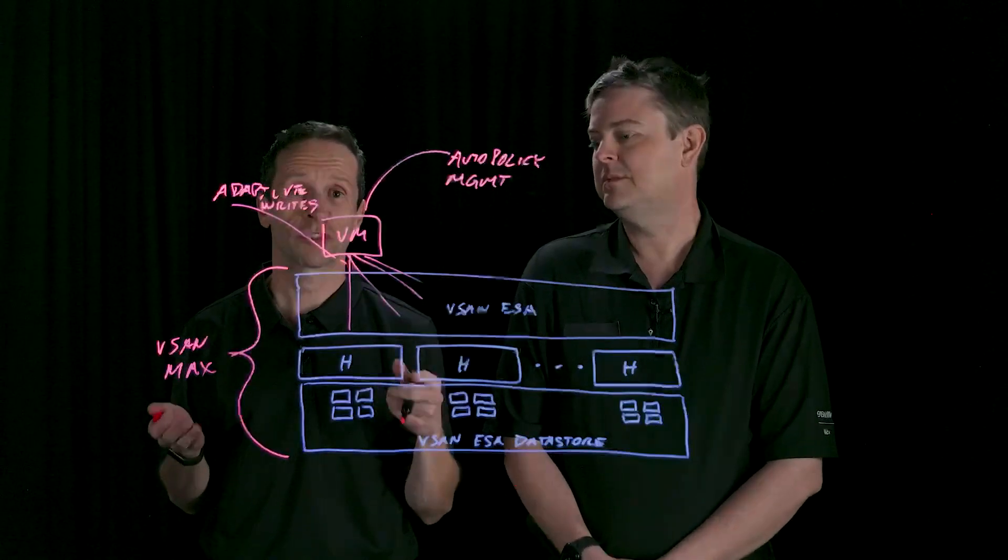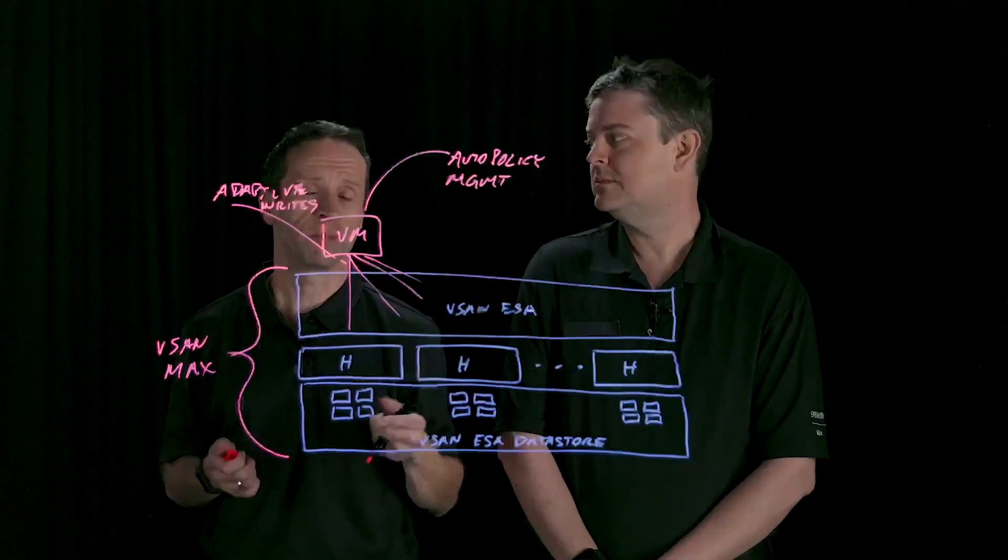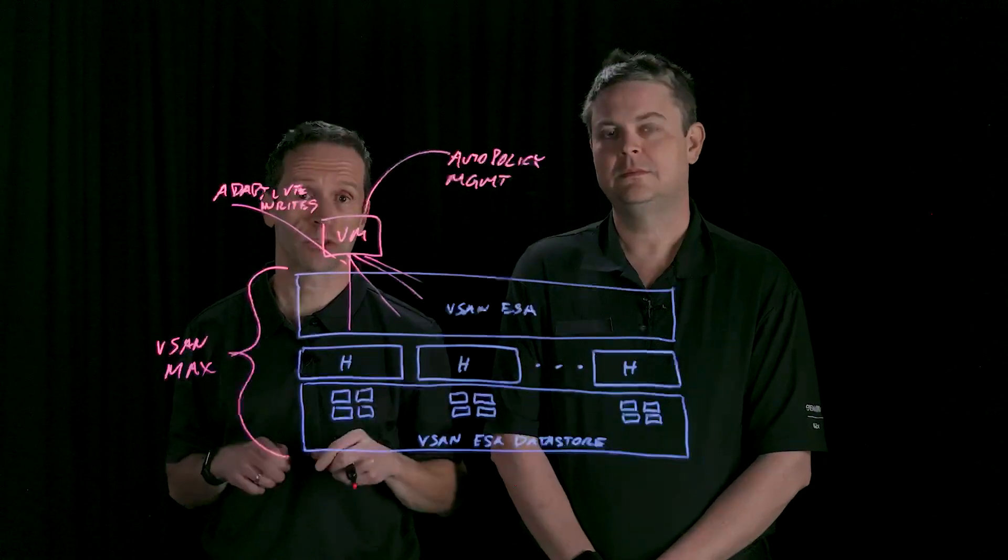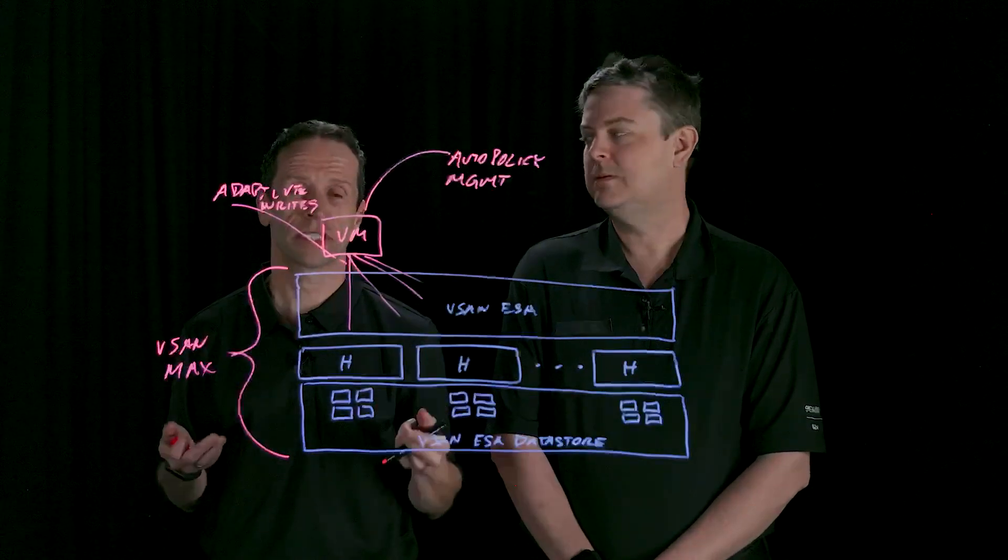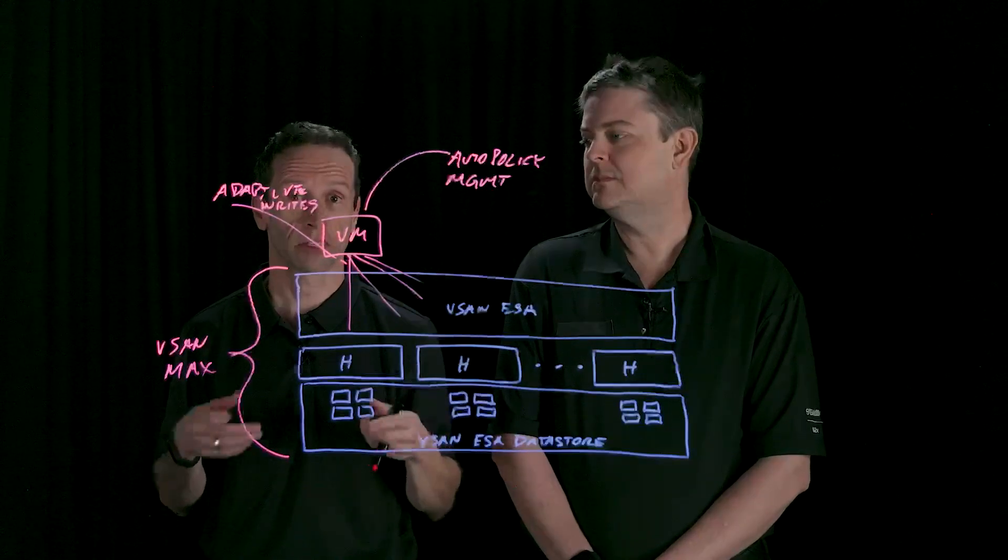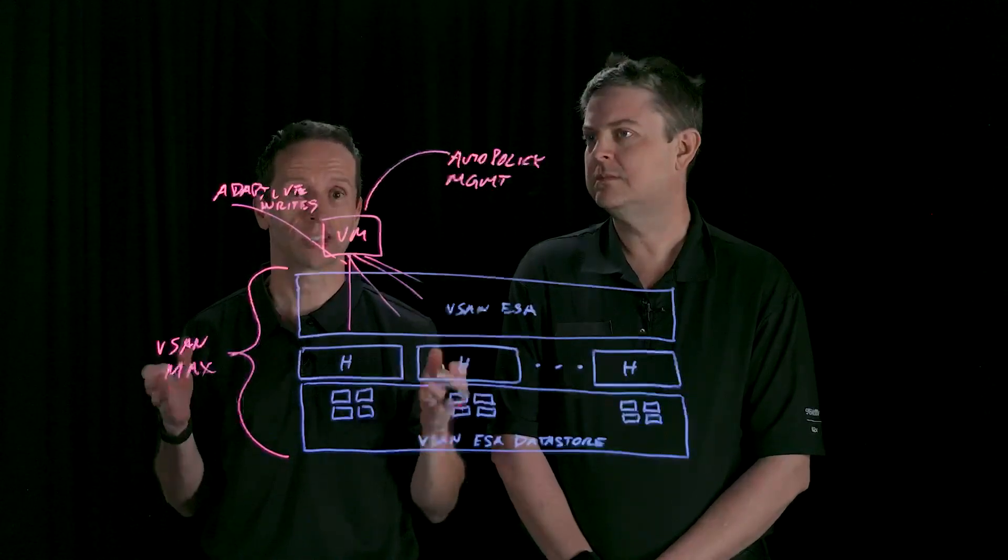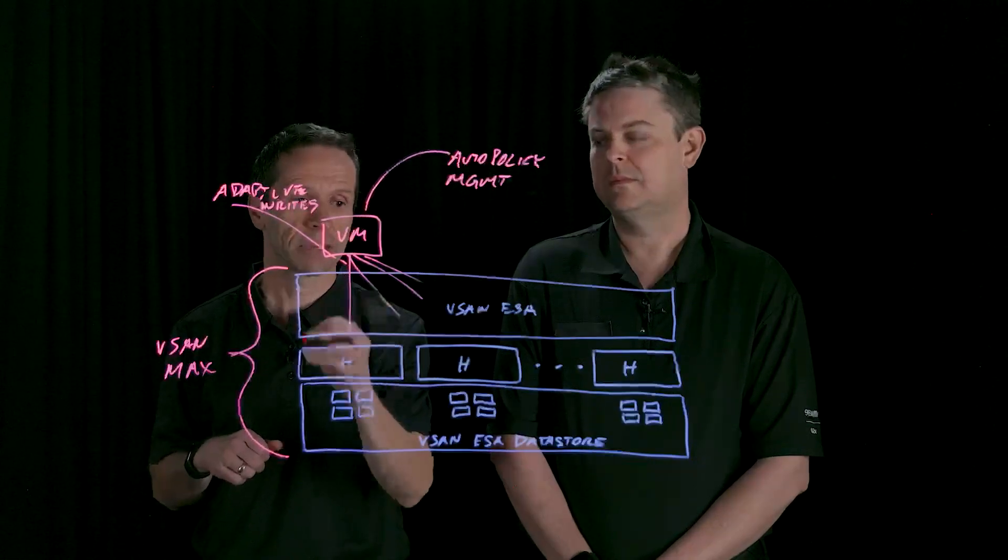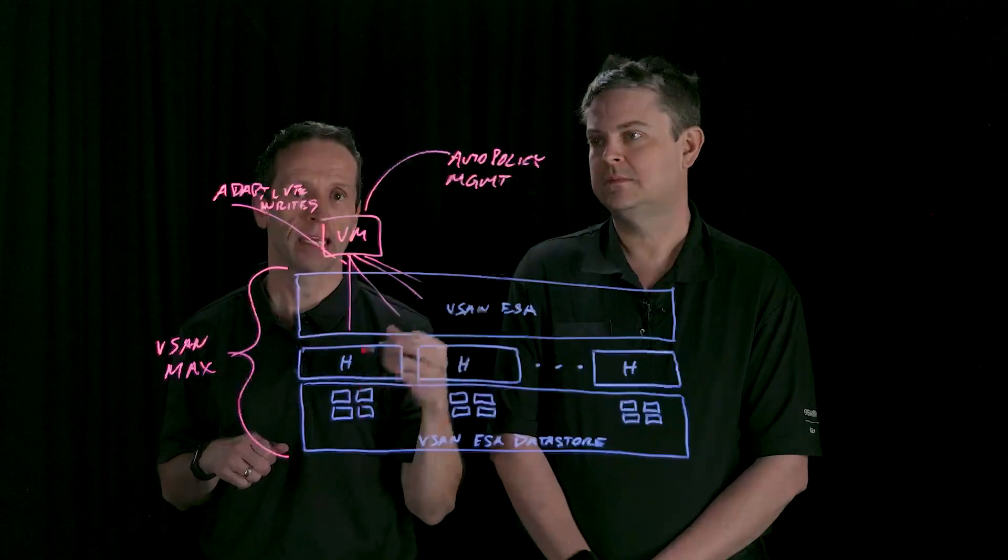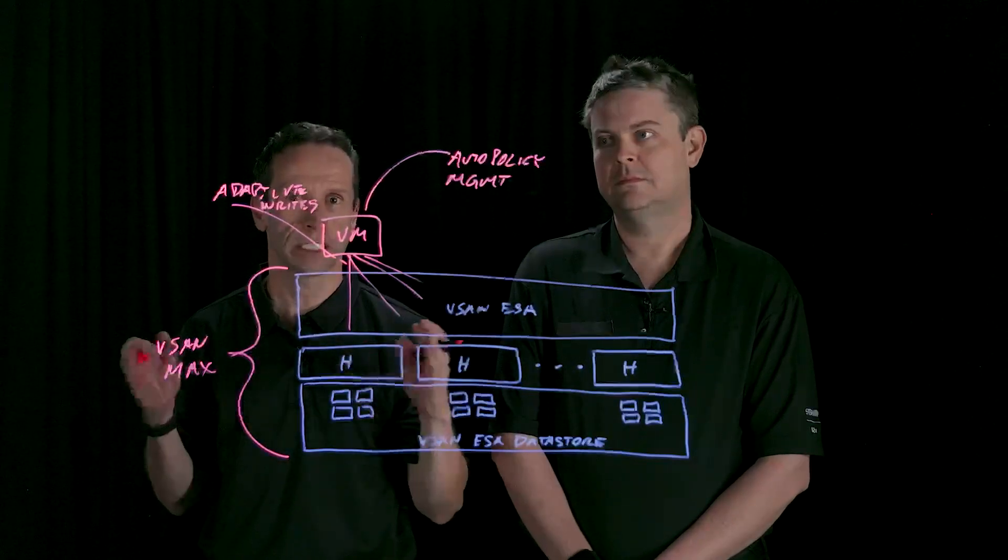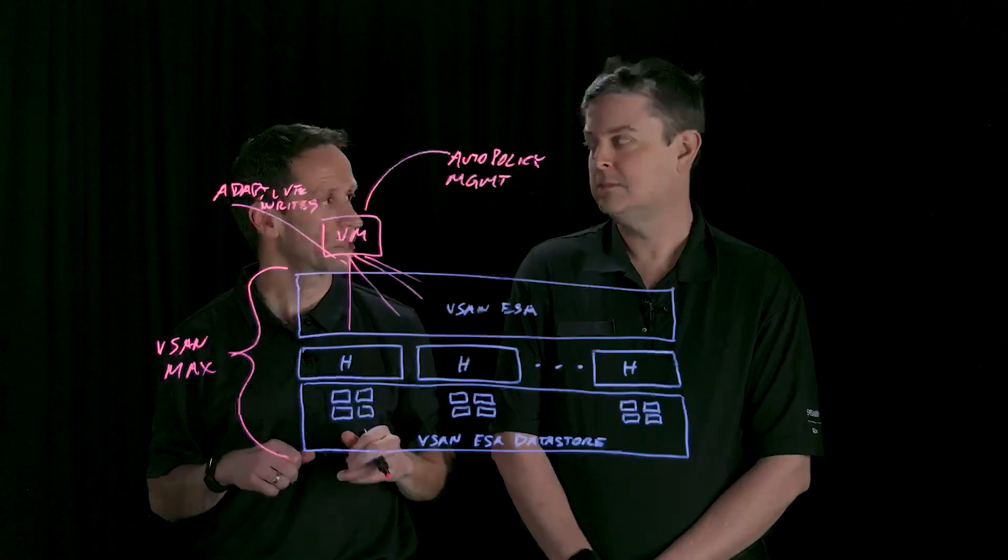Indeed. And perhaps one of the most important aspects of the improvements that we've made in vSAN 8 Update 1 and Update 2 for the Express Storage Architecture is it really allowed us to be able to introduce what we now refer to as vSAN MAX, our fully disaggregated centralized shared storage solution for vSphere clusters. And it is the power of vSAN ESA that gives us this ability to provide this world-class fully distributed storage solution for our customers.